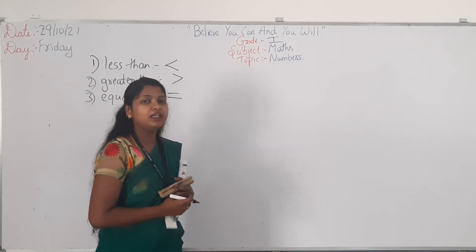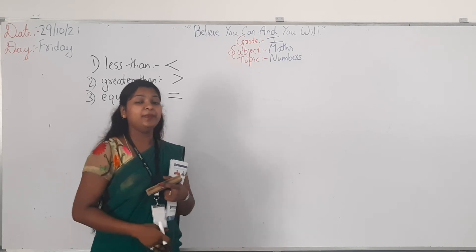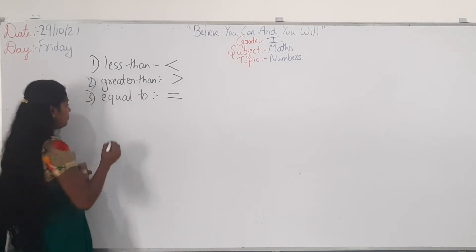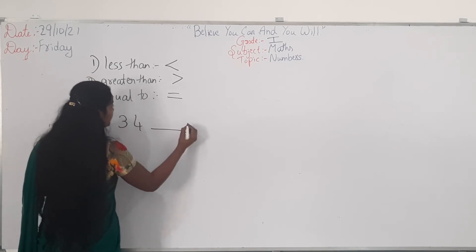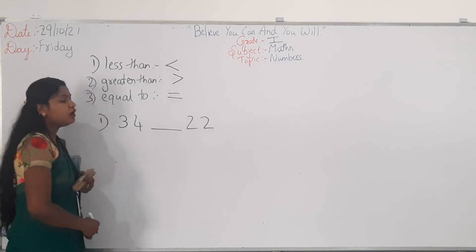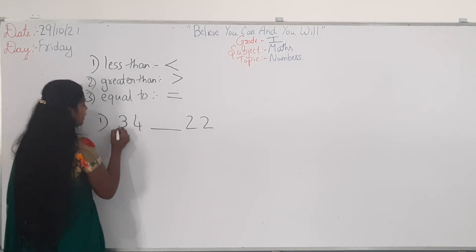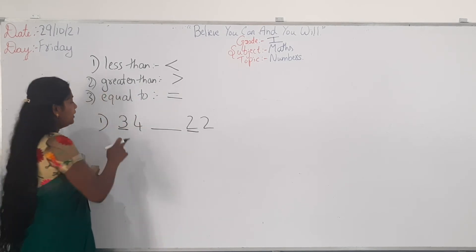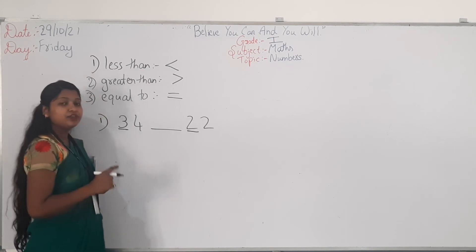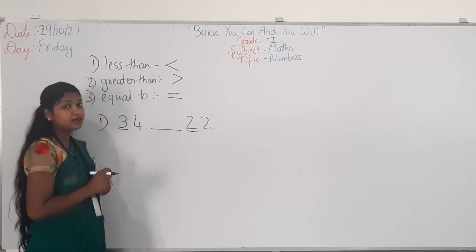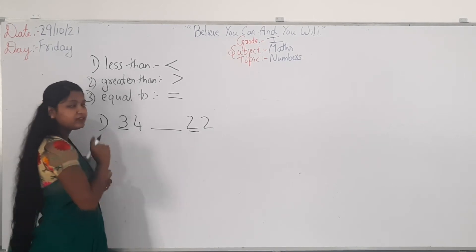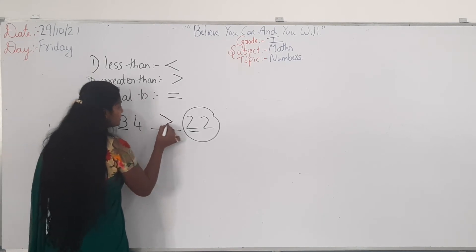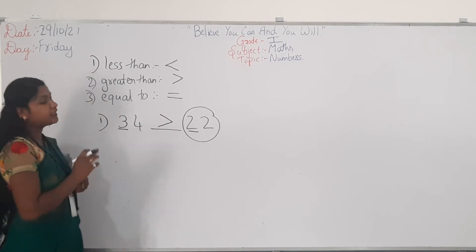In this grade, you are learning two-digit numbers. Now we will learn how to compare two-digit numbers. For example, 34 blank 22. How will you compare? Consider the first digits: here it is 3 and here it is 2. Since 2 is less than 3, so 22 is less than 34. Therefore, 34 is greater than 22.